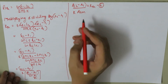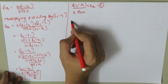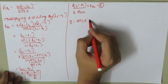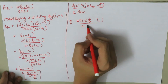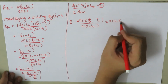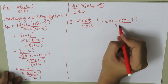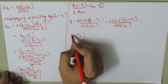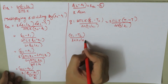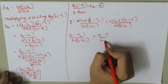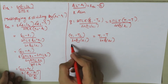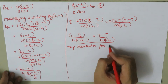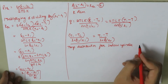Now, if we want to determine the temperature at any distance R, we use the equation Q equals 2πLK(T1 minus T2)/ln(R2/R1), which also equals 2πLK(T1 minus T)/ln(R/R1). Equating these, (T1 minus T2)/ln(R2/R1) equals (T1 minus T)/ln(R/R1). From this equation, it is clear that the temperature distribution for a hollow cylinder is logarithmic.